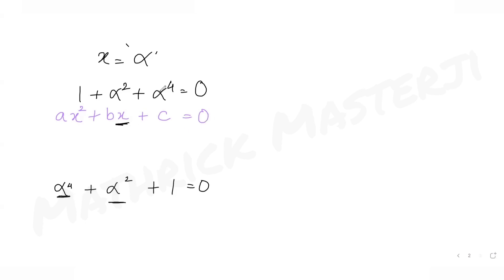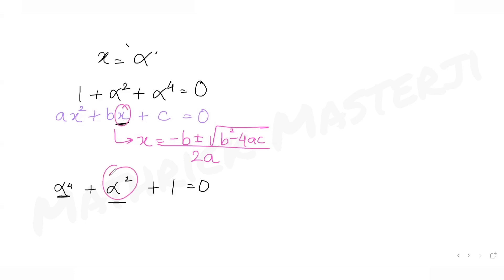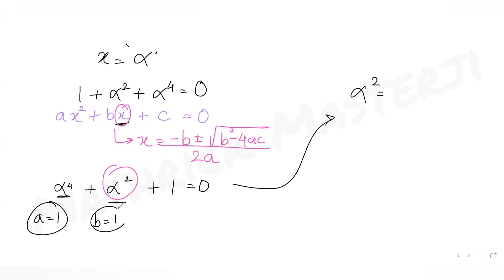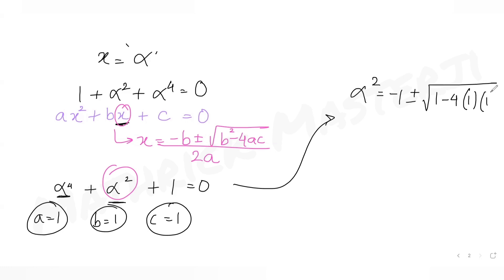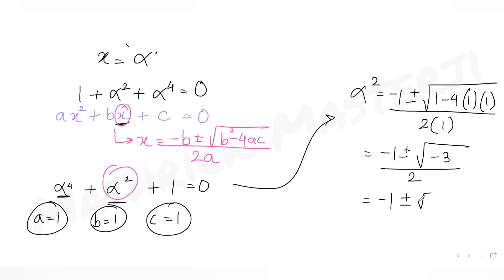Using the quadratic formula x = (-b ± √(b² - 4ac)) / 2a, where the variable is α², we get α² = (-1 ± √(1 - 4)) / 2, since a = 1, b = 1, c = 1. This gives α² = (-1 ± √(-3)) / 2 = (-1 ± √3·i) / 2, giving us complex roots for α².